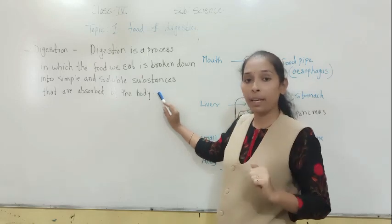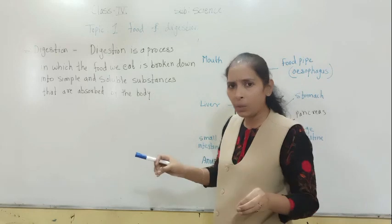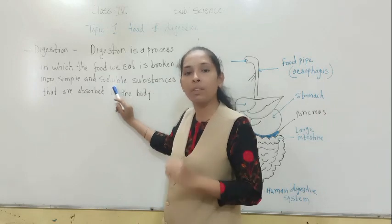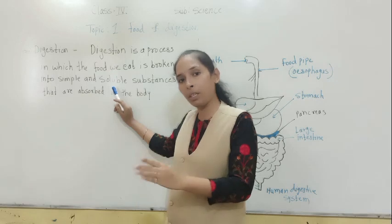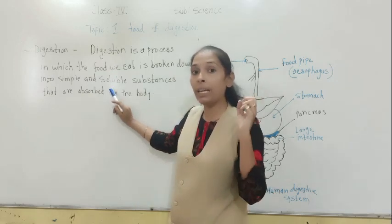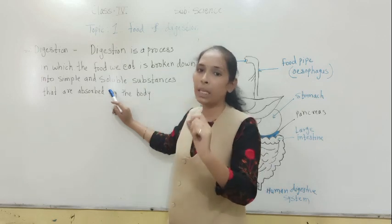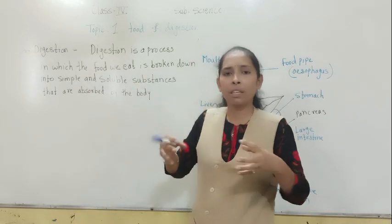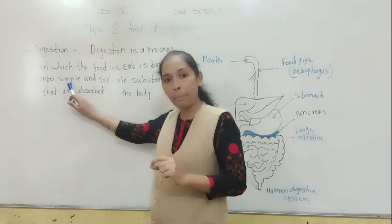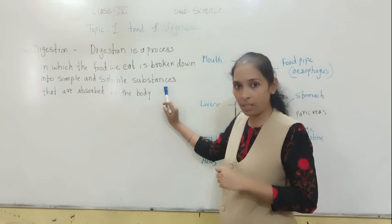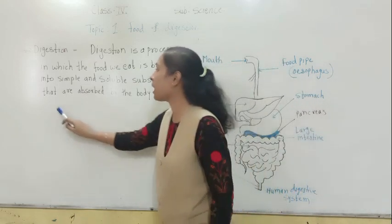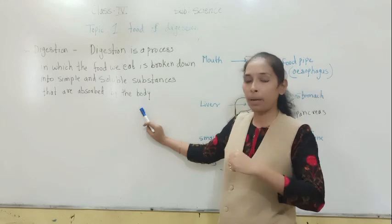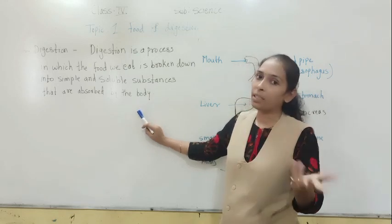The food does not give us direct energy. It gets broken down and converted into simple and soluble substances. Soluble means it gets mixed — for example, if you add salt into water, the salt dissolves. In this way, food gets broken down into pieces, converted into simple and soluble substances, absorbed by the body, and then our body gets the energy.